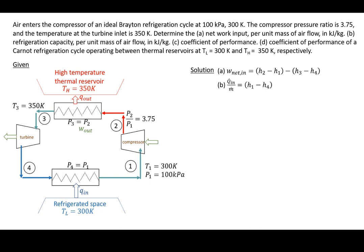Q_dot_in divided by m_dot. So that's little Q_in and that occurs between four and one, as you can see clearly drawn in the diagram. Coefficient of performance is what you're interested in over what you have to put into it. So what you're interested in is pulling heat out of that refrigerated space. And what you have to put into it is your work net in, which we've already defined both of those things in part A and part B.